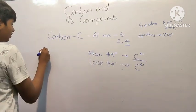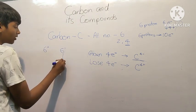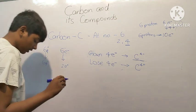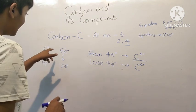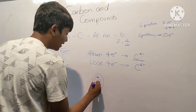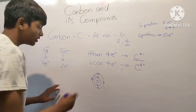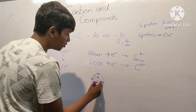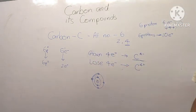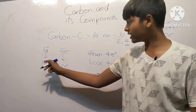Now let's look at losing 4 electrons. Carbon has 6 protons and 6 electrons. Losing 4 electrons would leave it with only 2 electrons. The nucleus holds electrons with force, and to break those forces and lose 4 electrons requires a lot of energy. So this is also not possible, leaving just 6 protons holding on to 2 electrons.